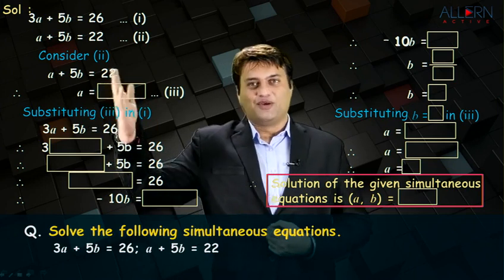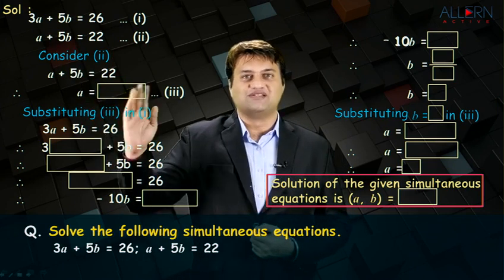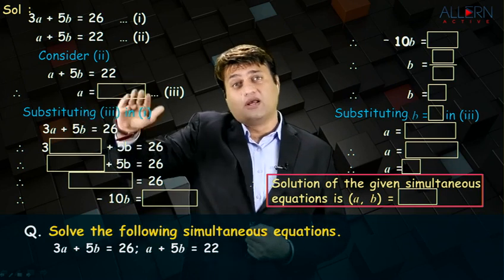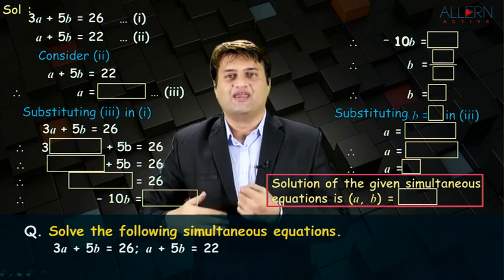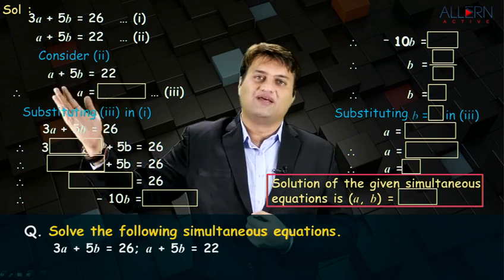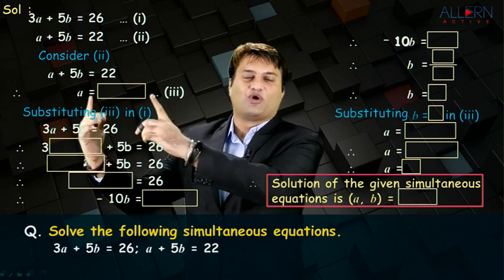Consider the second equation because it is clearly the simpler equation: a plus 5b is equal to 22. Now, you need to shift the bigger coefficient variable to the other side and get it in the form of a is equal to something. Since 5b is a bigger coefficient variable, you shift it to the other side. So, in the block, what do you write?